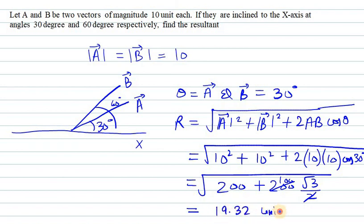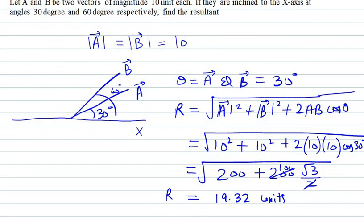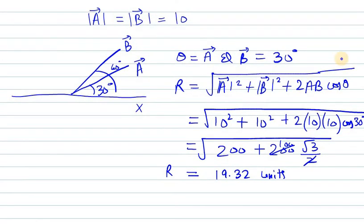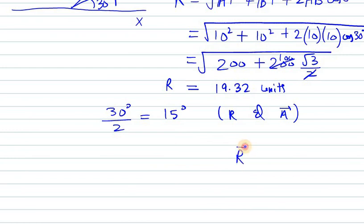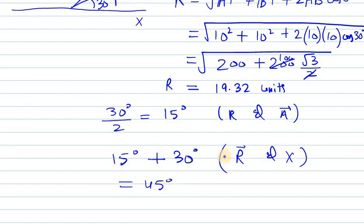When you solve this whole equation, you get the answer as 19.32 units, so the resultant vector is 19.32 units. Since the vectors have equal magnitude, the resultant bisects the angle theta between them. The angle between the resultant and vector A is 30 over 2, that is 15 degrees. The angle between the resultant and the x-axis is therefore 15 degrees plus 30 degrees, which is 45 degrees.